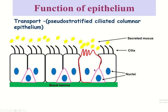Transport is another function. Cilia — seen in ciliated columnar epithelium — are a cell surface modification. Cilia can move and help in the transport of fluid or materials.